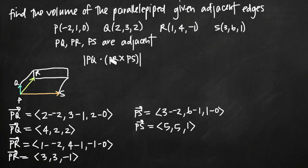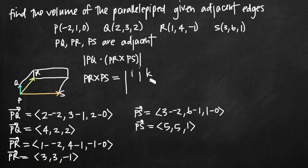Setting up the cross product of PR and PS, we write the matrix with i, j, and k in the first row. Then vector PR, which we found to be (3, 3, -1), goes in the second row: 3, 3, -1. And then vector PS, which is (5, 5, 1), goes in the third row.